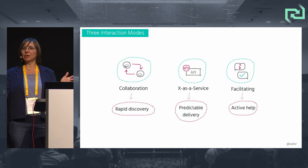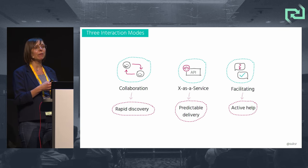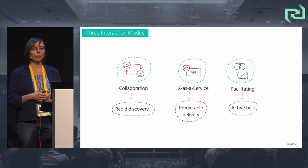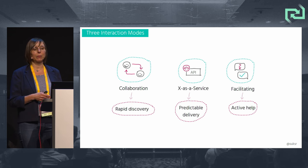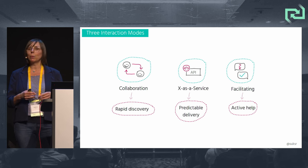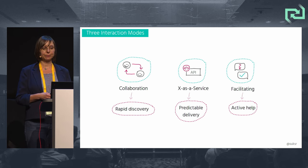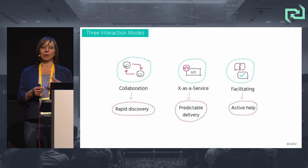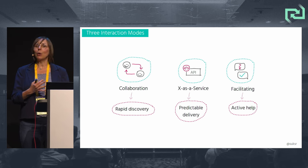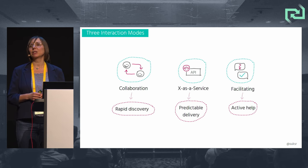Just organizing these team types is not enough to become effective — how teams interact with each other and when to evolve that interaction is also very critical for organizational effectiveness. With Collaboration, teams work very closely together over a limited period of time, suitable for rapid discovery and innovation, for example when exploring new technologies — it's meant to be short-lived. With X-as-a-Service, it suits well when one team needs to use a code library, component, API, or platform that can be effectively provided by another team as a service, working best where predictable delivery is needed.